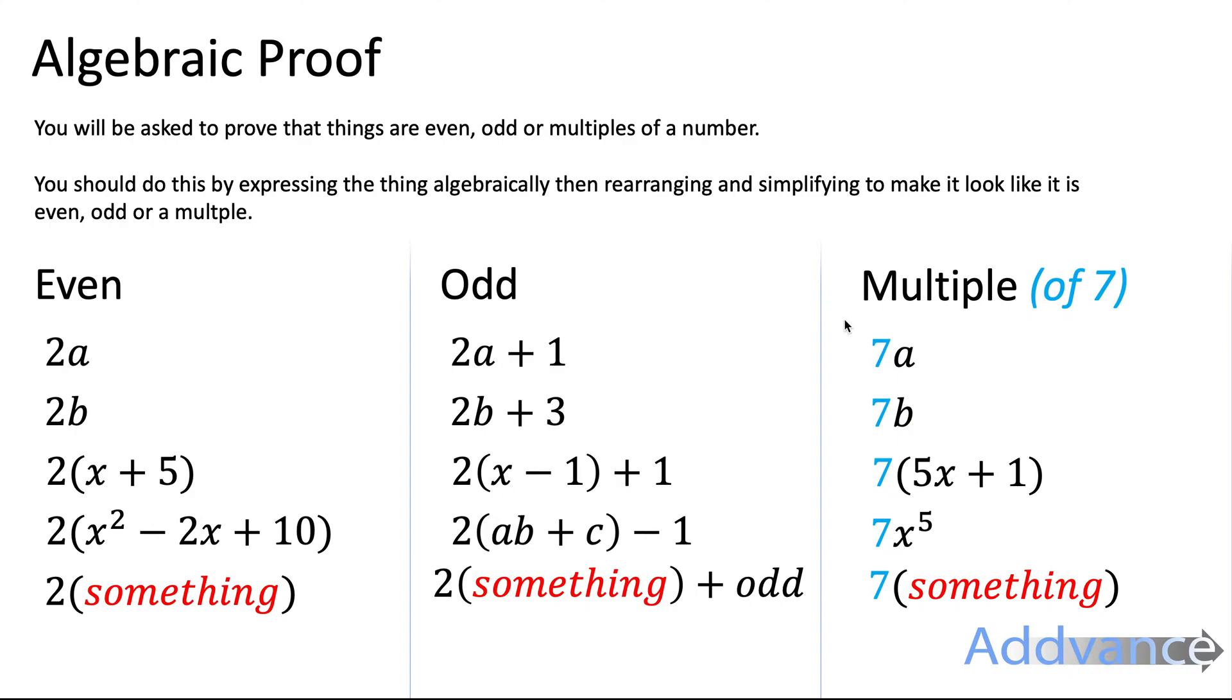A multiple of something would be that number times something. For example, a multiple of 7 could be 7a or it could be 7x squared, x to the power of 5, it could be anything. And all of these will be a multiple of 7. You should make a note of that before we continue so you remember it for the rest of the video.